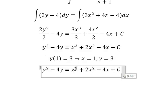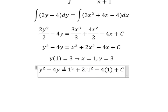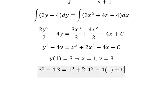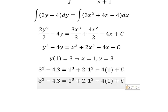Substituting x = 1 and y = 3 into the equation, we get 3² - 4(3) on the left, which equals -3. On the right, we have 1³ + 2(1²) - 4(1) + C, which simplifies to -1 + C.